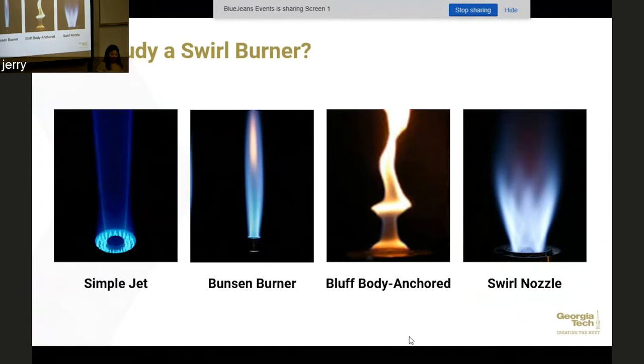And then why would we want to study a swirl burner or what benefits does it have over other types of burners? So here on this slide I just have a few different types of jets: a simple jet, a Bunsen burner, a bluff body anchored flame, and the last image is a swirl nozzle. The swirl nozzle offers a lot of benefits in that it is much more resistant to things like blow off. There's enhanced stability and it's a much more compact flame which is ideal for aerospace applications.